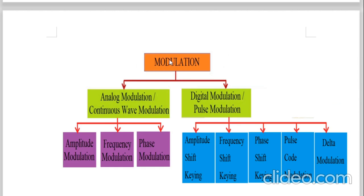Now let us come to our main topic: modulation. There are various types of modulations which we are going to study one by one. Basically, modulations are classified into two categories: analog modulation and digital modulation.